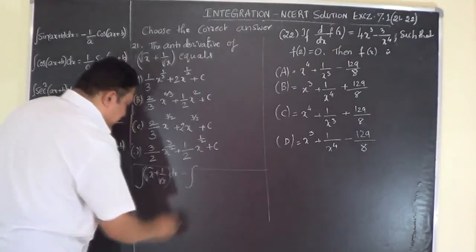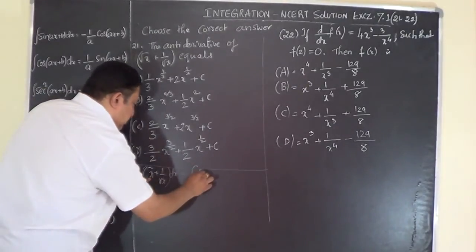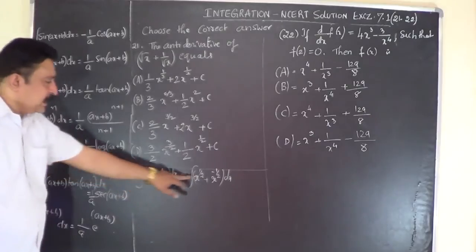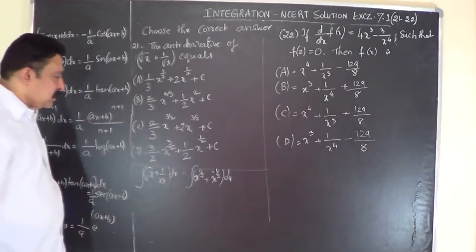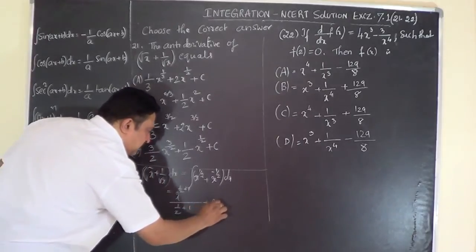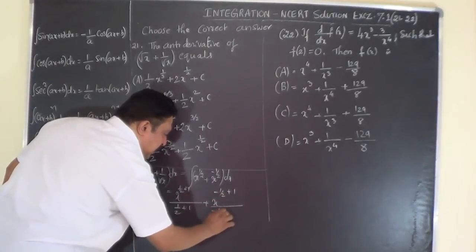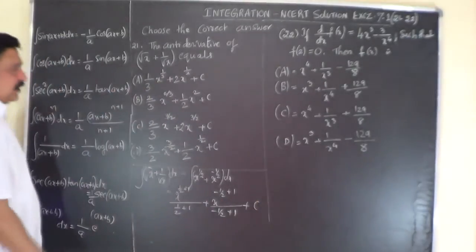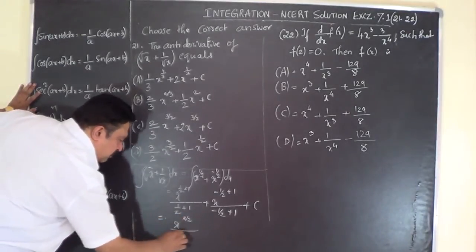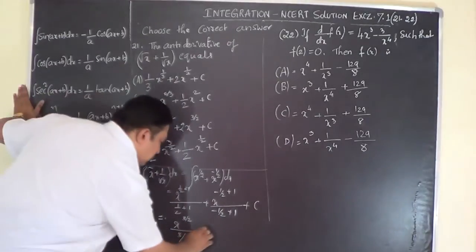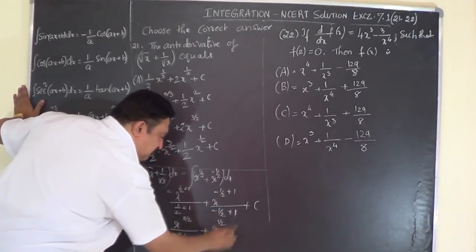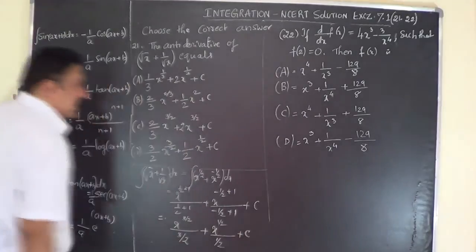This is straightforwardly based on the power rule. We write it as ∫(x^(1/2) + x^(-1/2)) dx, since √x = x^(1/2) and 1/√x = x^(-1/2). Integrating: x^(1/2 + 1)/(1/2 + 1) + x^(-1/2 + 1)/(-1/2 + 1) + c, which gives x^(3/2)/(3/2) + x^(1/2)/(1/2) + c.